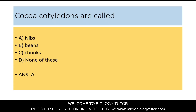Next question: Cocoa cotyledons are called — A. Nibs, B. Beans, C. Chunks, D. None of these. Answer is A: Nibs.